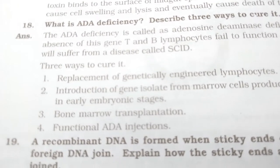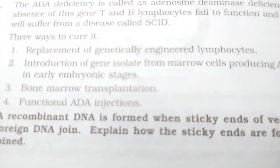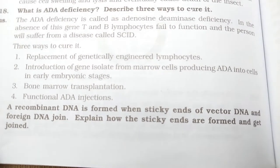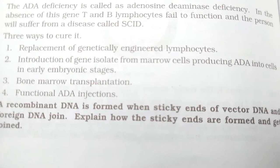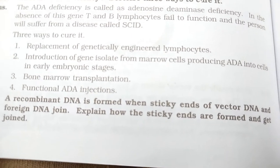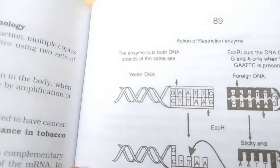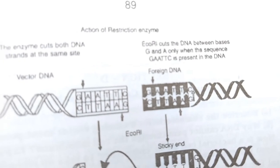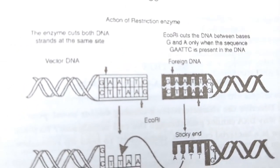The 19th question: a recombinant DNA is formed when sticky ends of vector DNA and foreign DNA join. Explain how the sticky ends are formed and get joined. The answer shows the action of the restriction enzyme.